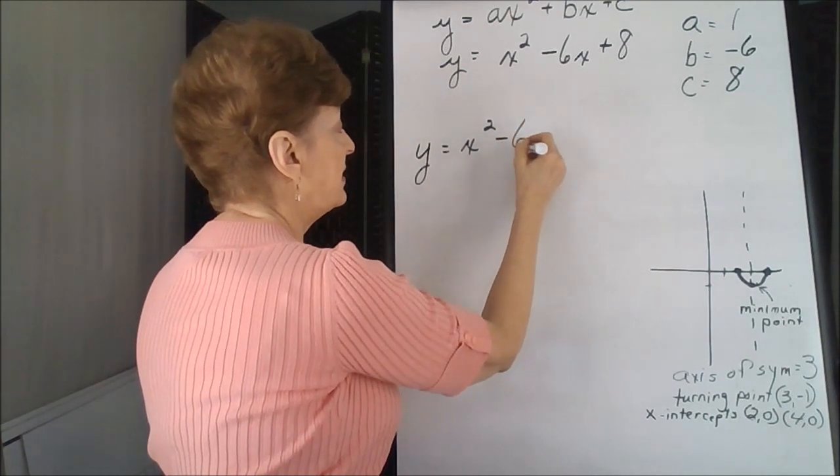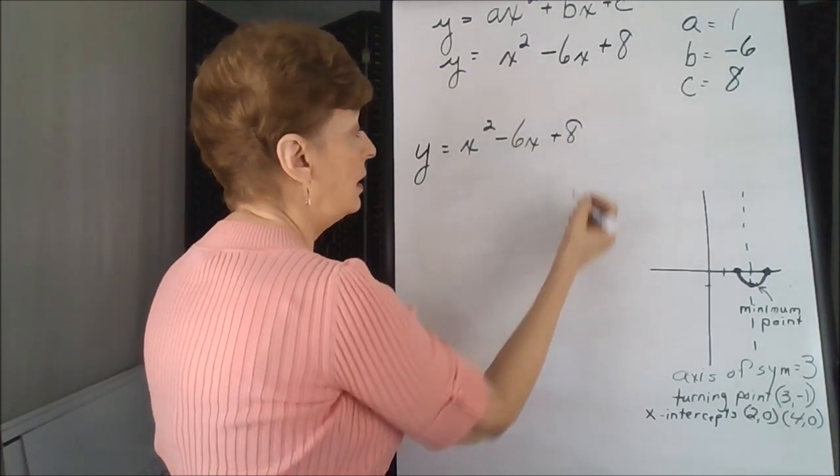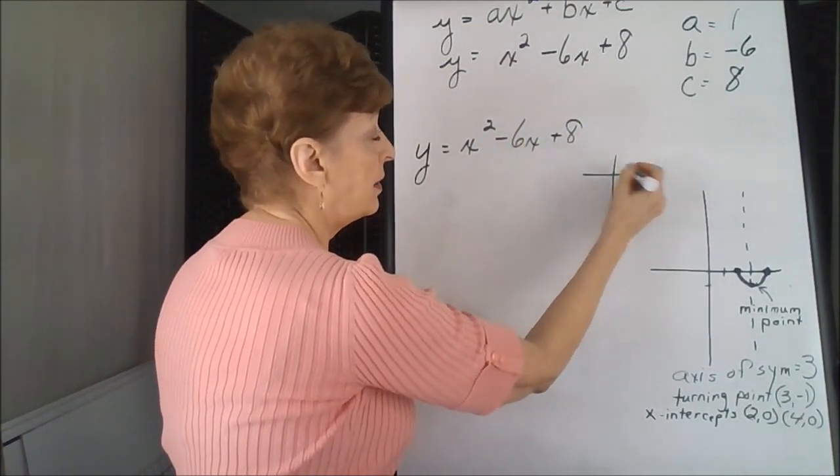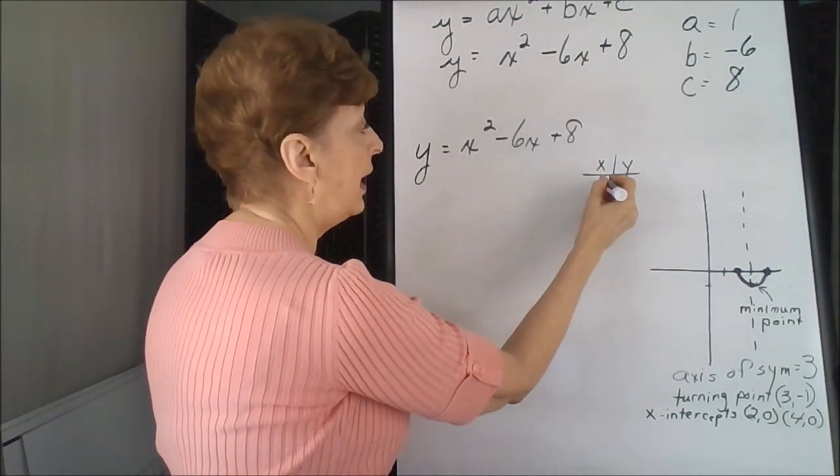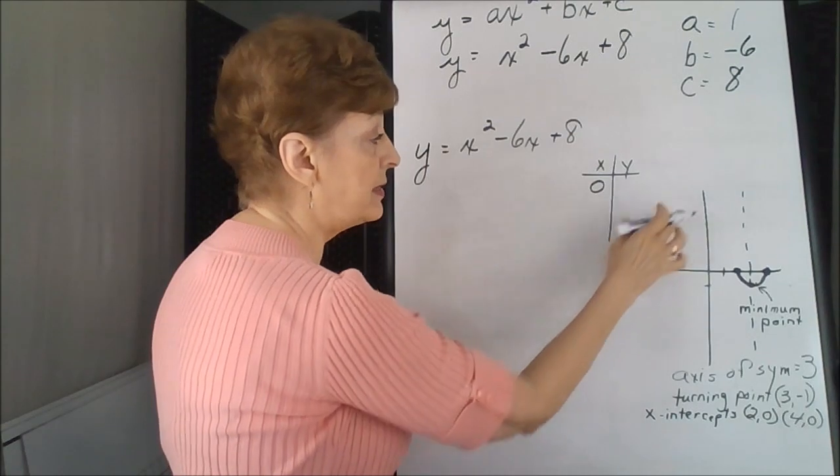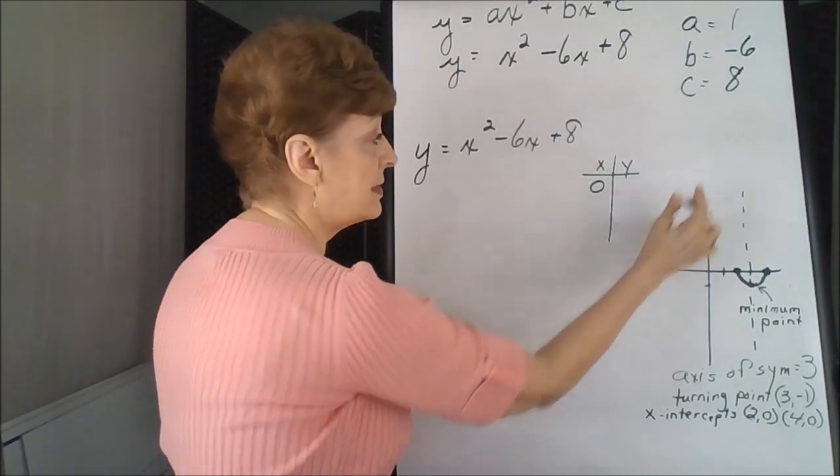The math is very simple on this one. If we were to make our x and y t-chart, and we call x zero, it's going to have to be zero if it hits the y-axis at some point.